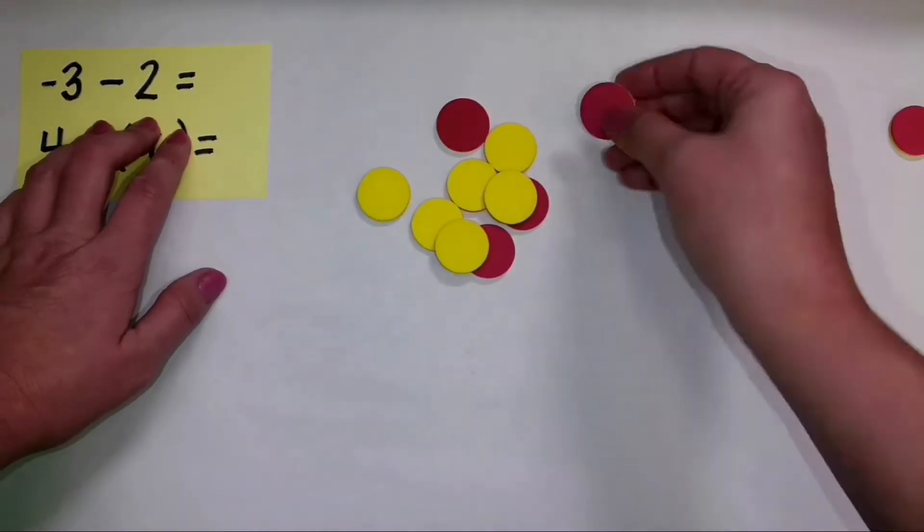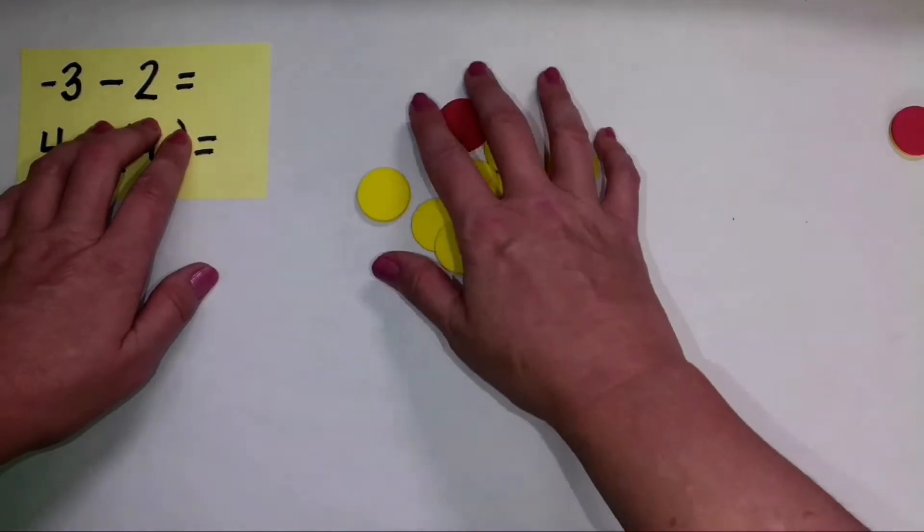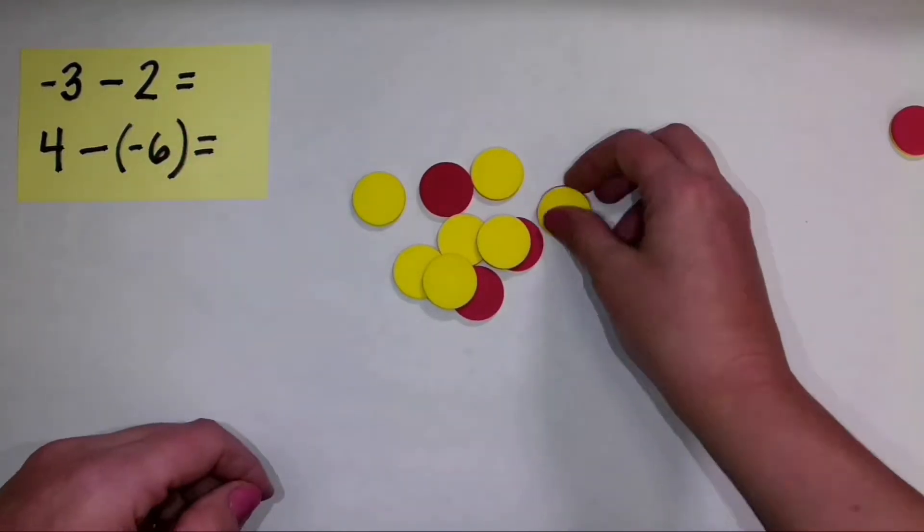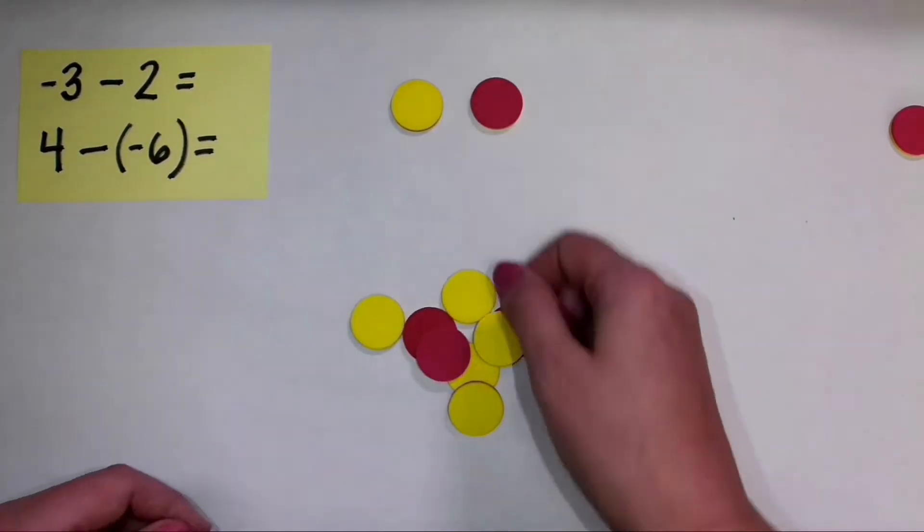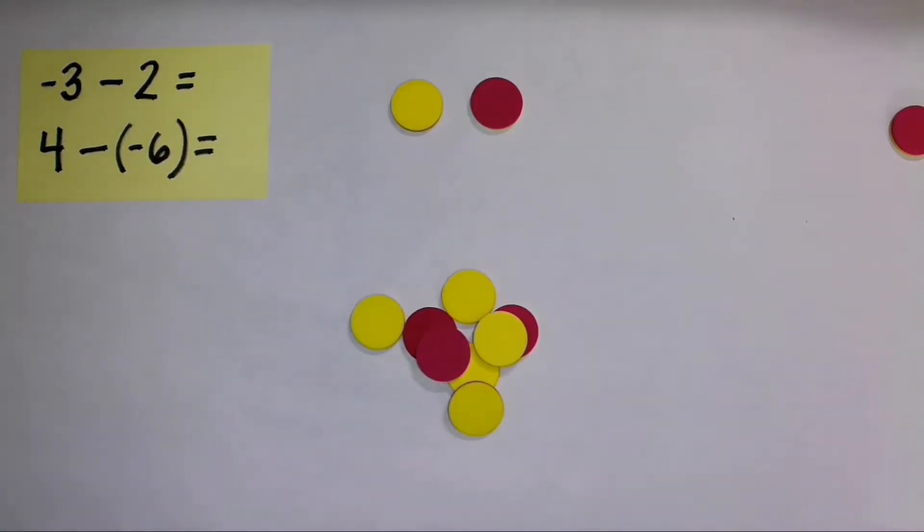They have two sides, that's why we call them two-color counters. And when we are doing this with integers, we are going to use the yellow side to represent positive integers, and the red side to represent negative integers.